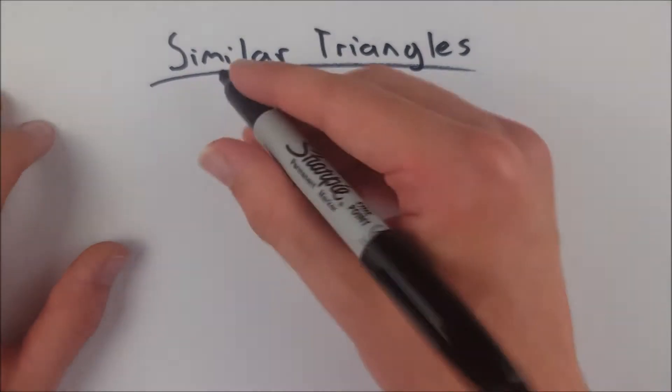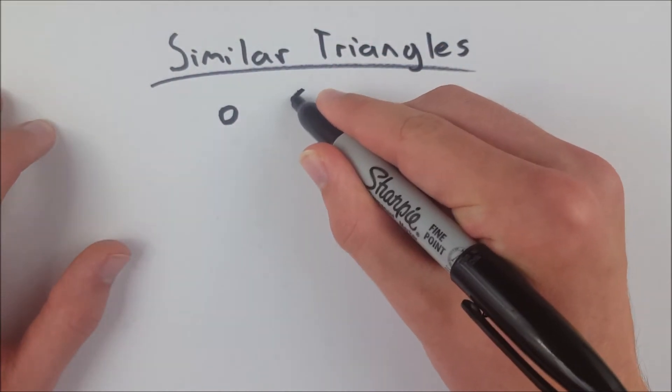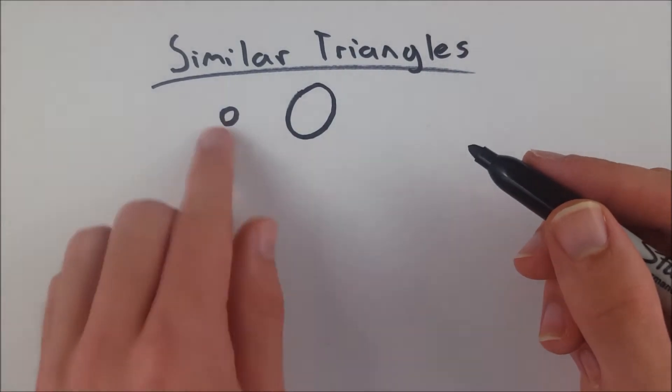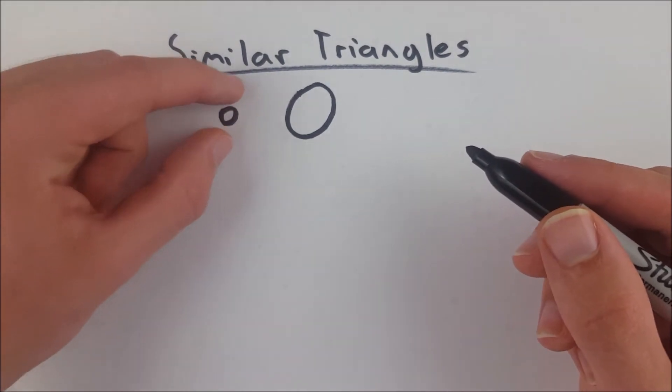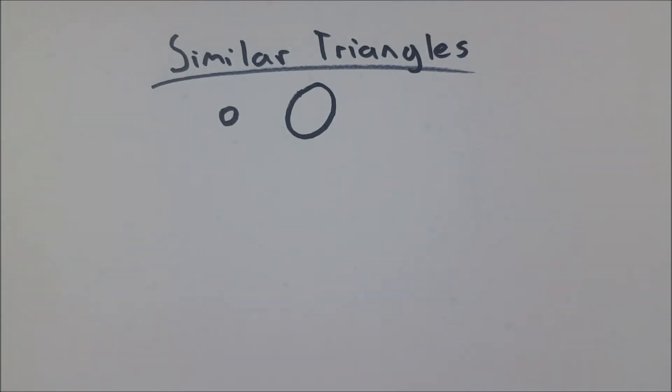If you consider circles first for a moment, you could take any two circles and shrink or enlarge them so that they fit perfectly on top of each other. Of course, these circles aren't perfectly drawn, but we could take this smaller one and just grow it such that it fits perfectly over this larger circle. The same thing is true with similar triangles.